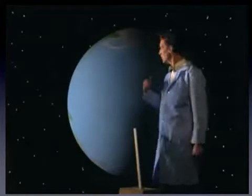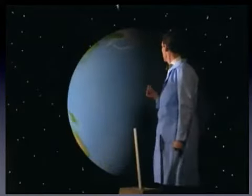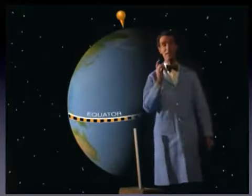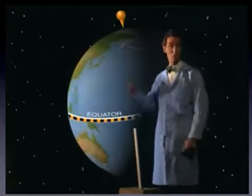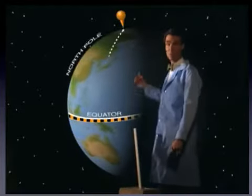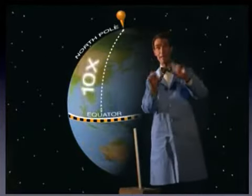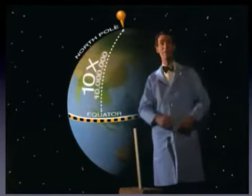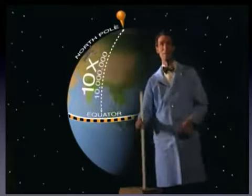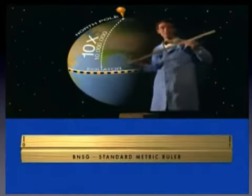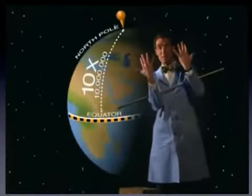So what we did is we looked at the Earth. We divided the distance from the North Pole to the equator in tens — ten million times — and we got this. It's a meter. We use tens because humans have ten fingers.